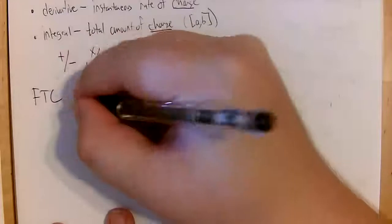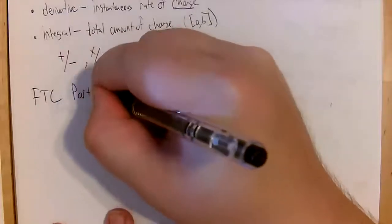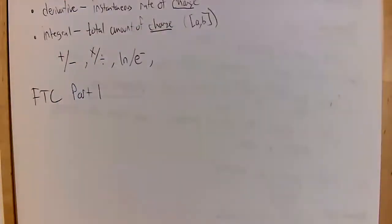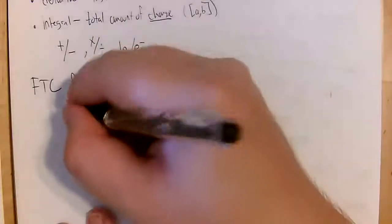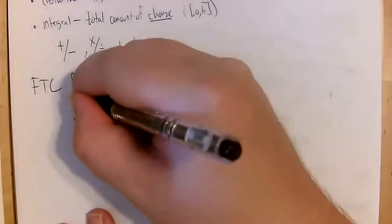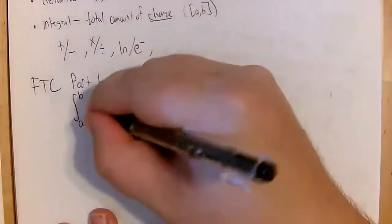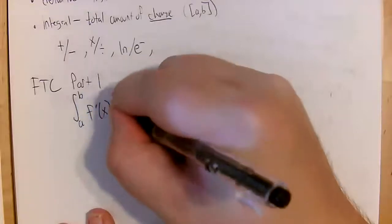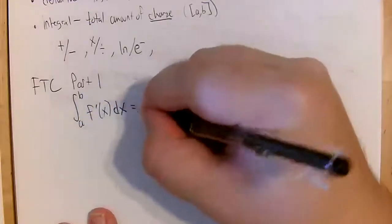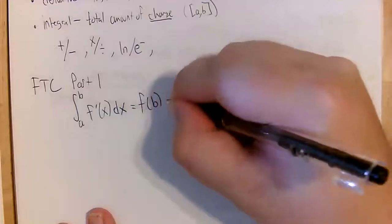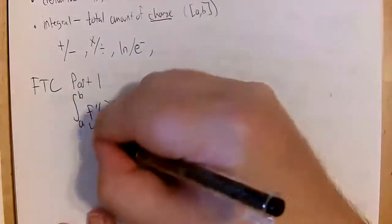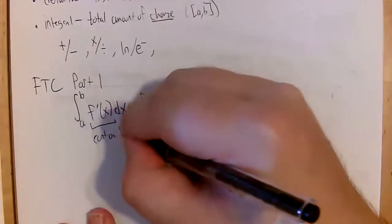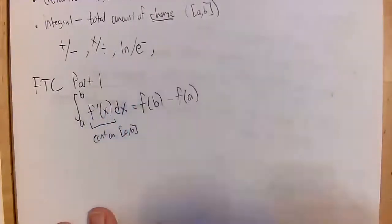Let's talk about the FTC Part One. People disagree about which part is part one and which is part two — I'm just going to call this one part one. Part one of the Fundamental Theorem of Calculus says that if we have the integral from a to b of f prime of x dx, this equals f of b minus f of a, provided that f prime is continuous on the interval a to b.